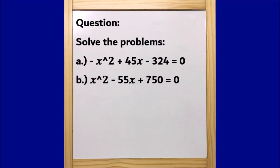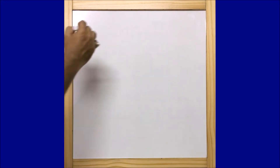The given question is: solve the problems. They have given two equations. One is minus x squared plus 45x minus 324 equals 0, and the other one is x squared minus 55x plus 750 equals 0. Let us solve them one by one.